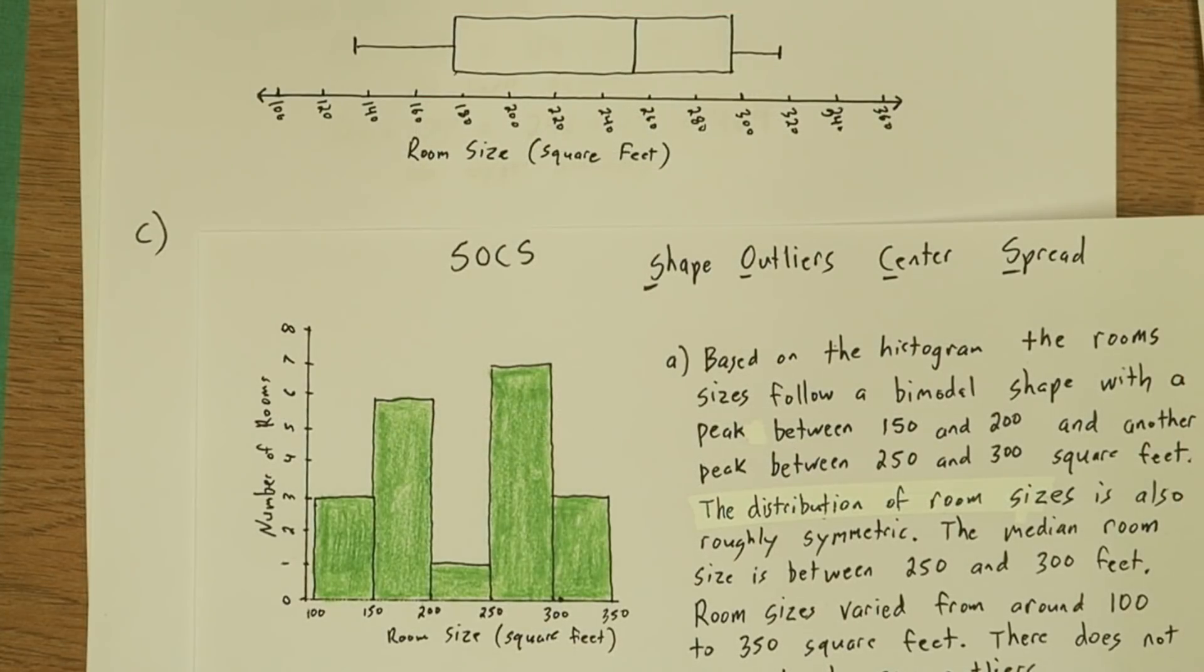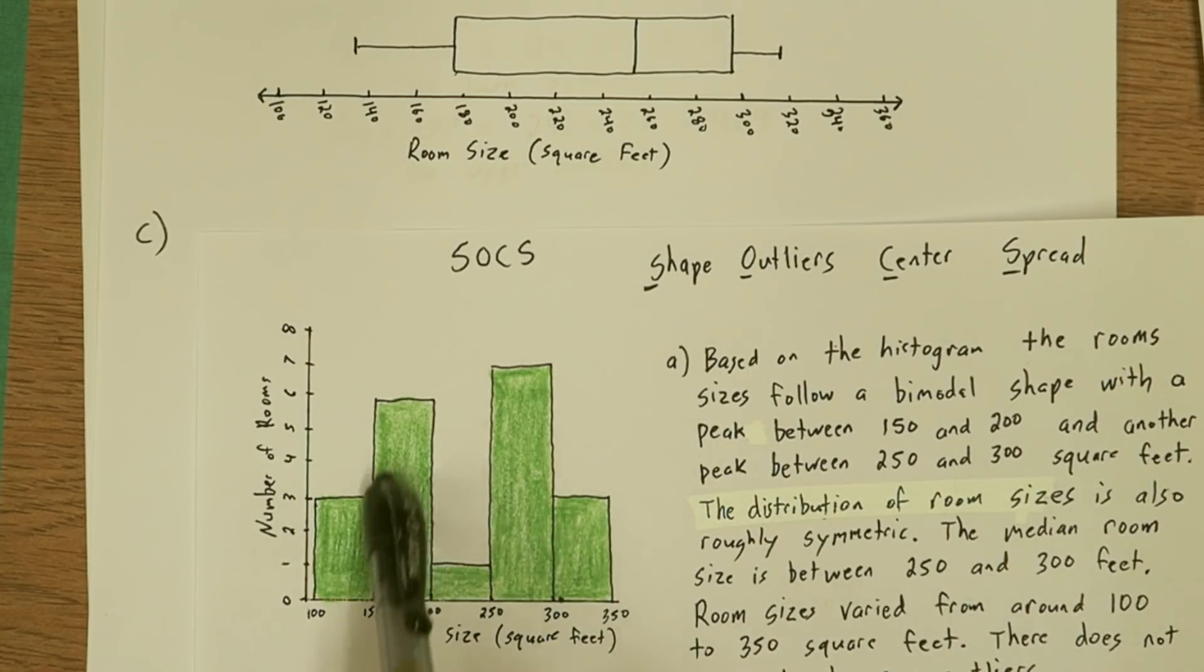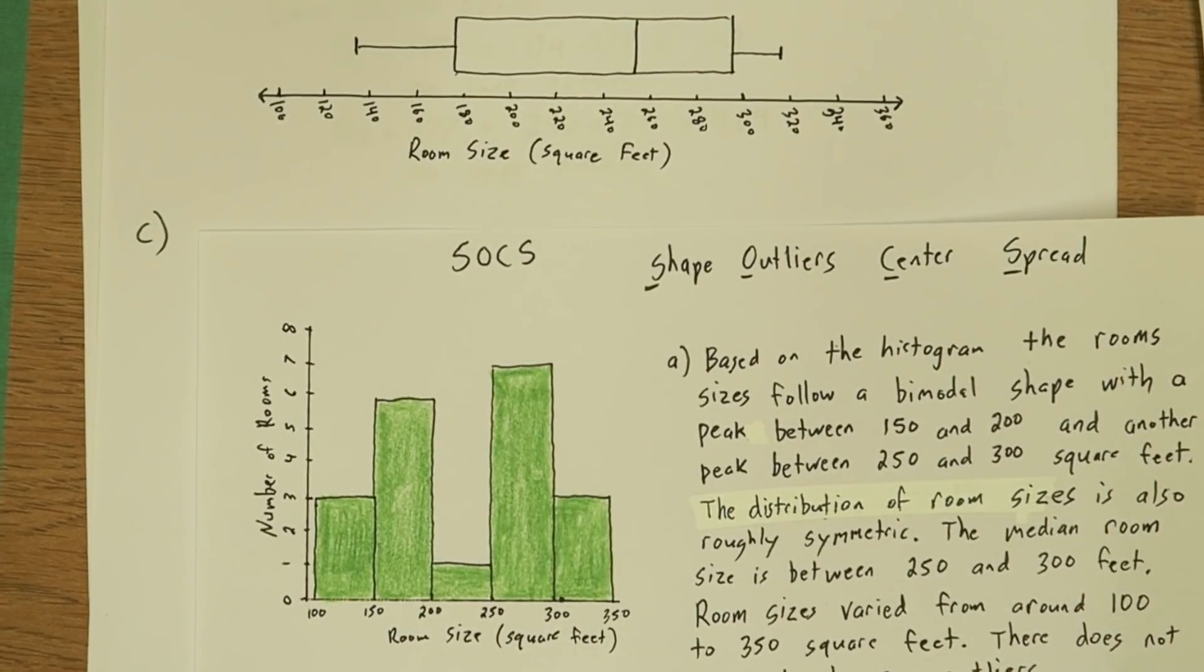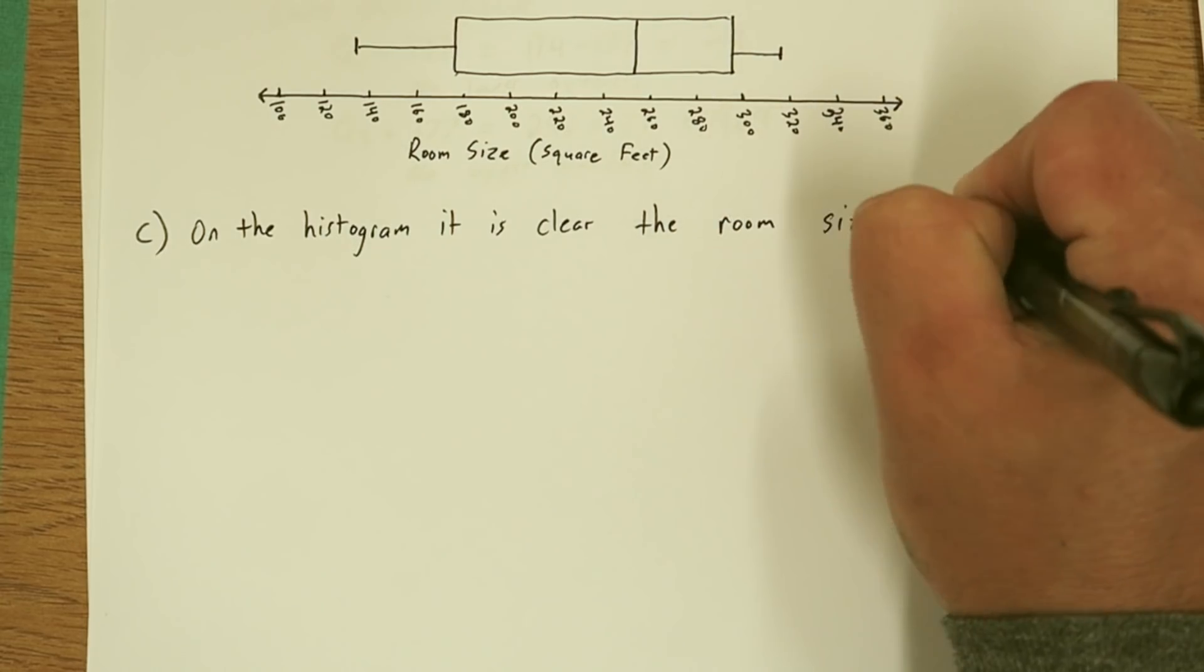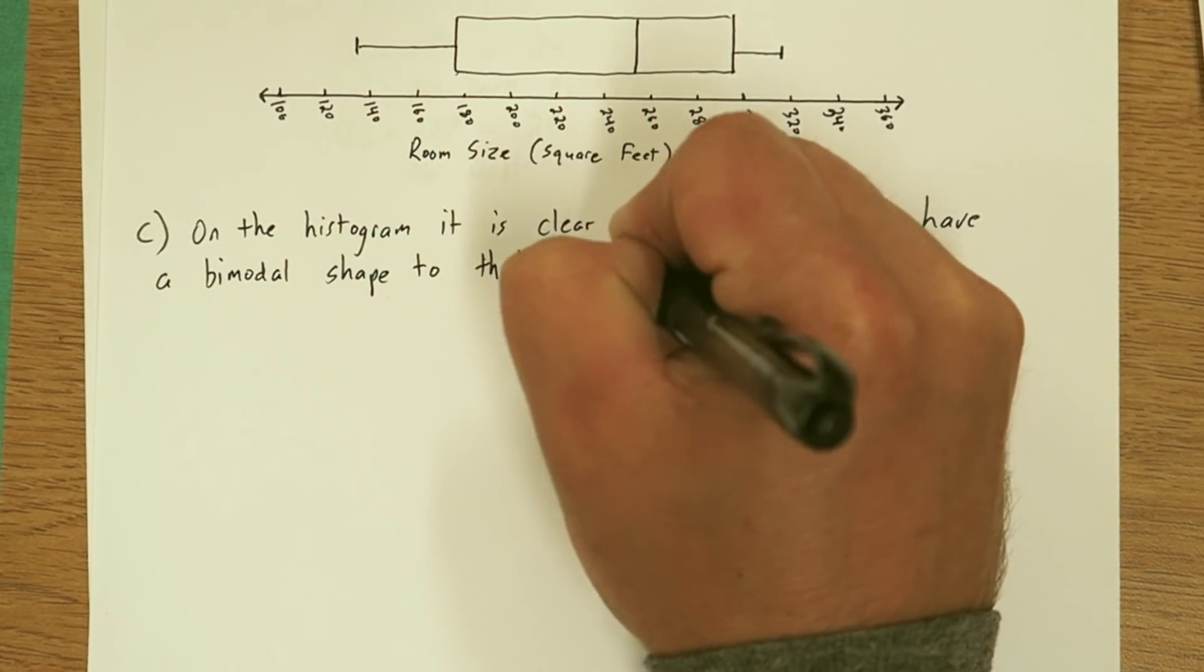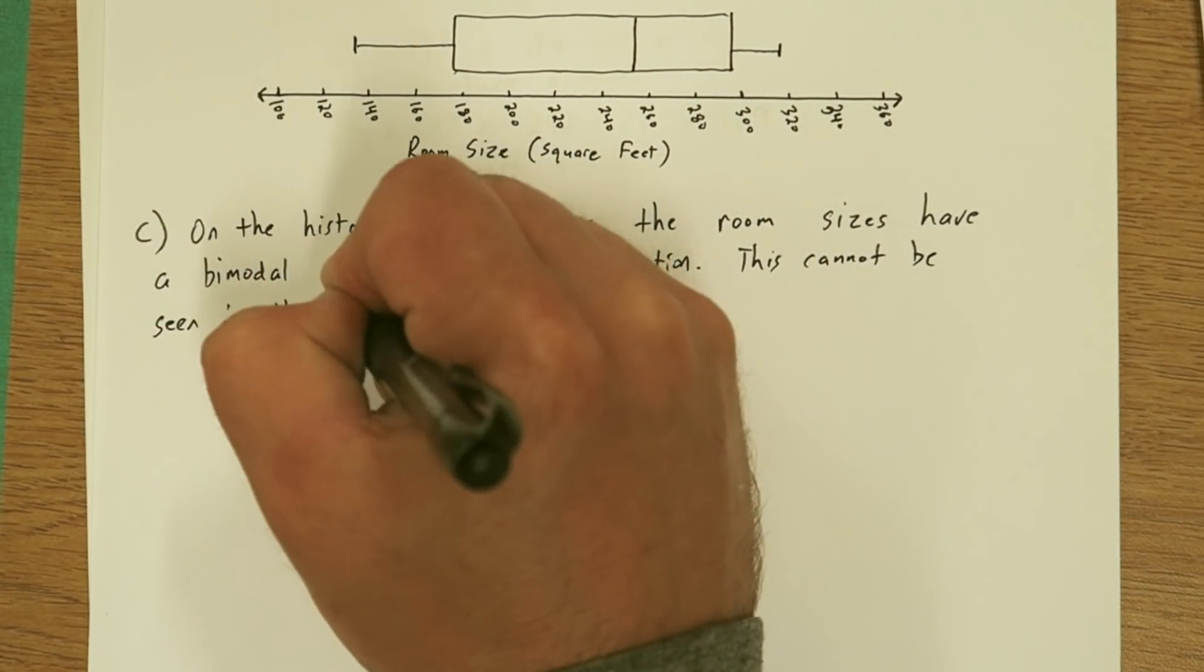Part C asks, what characteristic of shape of room size is apparent from the histogram but not from the box plot? So when we're looking at the shape of the histogram, we clearly see this bimodal-ness. On the box plot, we can't see that at all. So that's our answer. On the histogram, it's clear the room sizes have a bimodal shape to their distribution. This cannot be seen in the box plot.